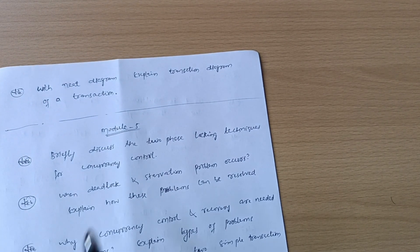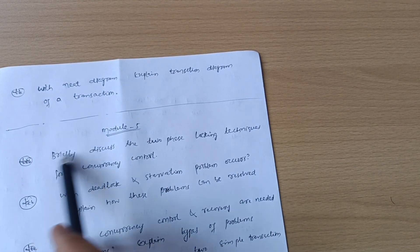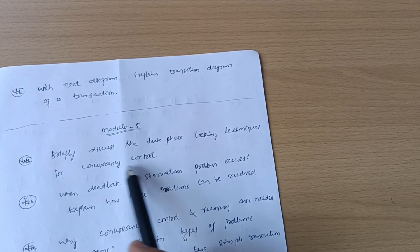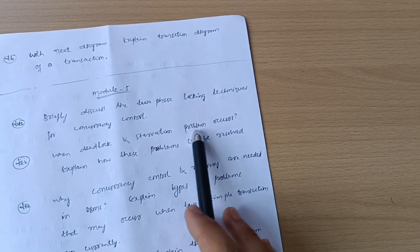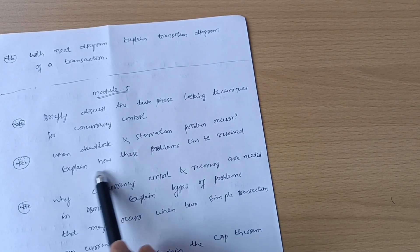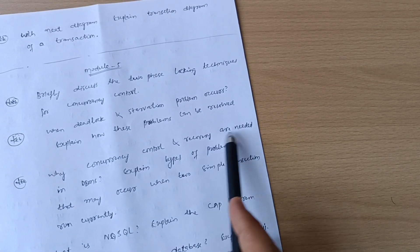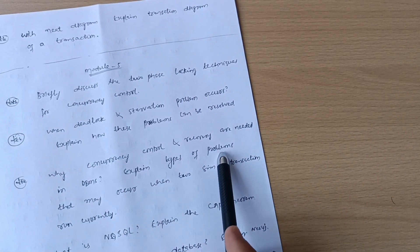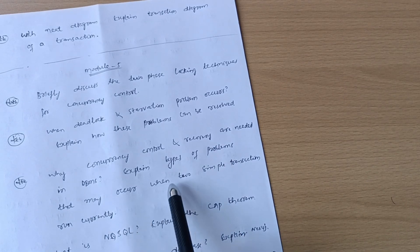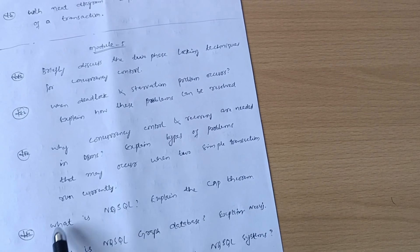Model 5: Briefly discuss the two-phase locking techniques - super important question for concurrency control. When do deadlock and starvation problems occur and explain how these problems can be resolved. Why are concurrency control and recovery needed in DBMS? Explain types of problems that may occur when two simple transactions run concurrently.